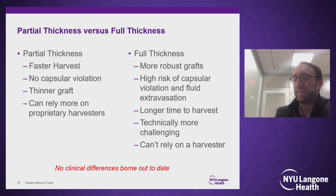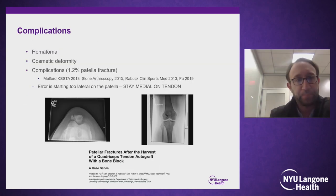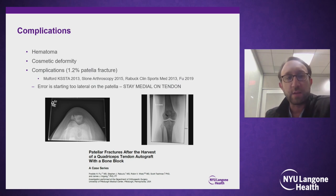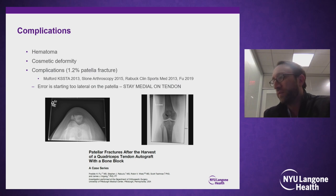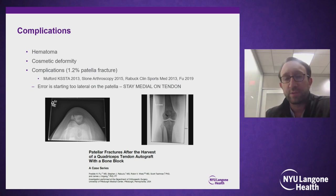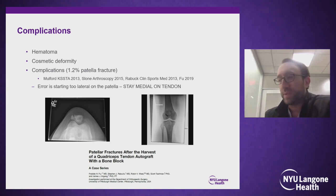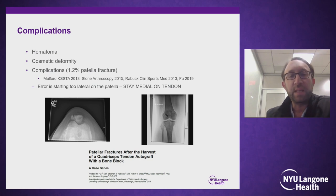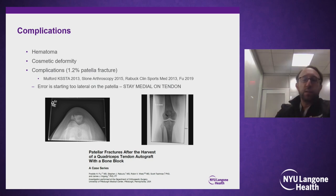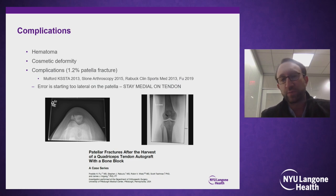Complications include hematoma and cosmesis — particularly for young women who can see their scar when sitting down. One of the main errors is patellar fracture, which can occur especially if you start too lateral on the patella. Stay medial on the tendon to get a nice thick piece of tissue with less risk of injury to the patella. For the tibia, using a big interference screw backed up with a knotless screw provides cortical fixation as backup.